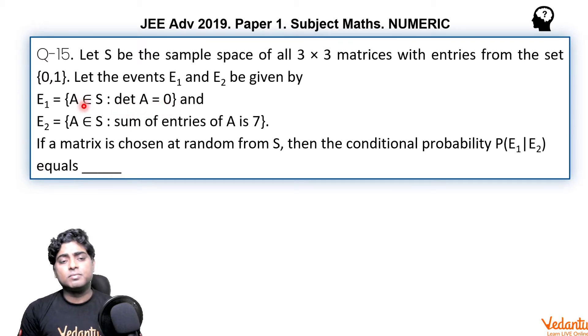E1 consists of matrices A, those matrices whose determinant is 0, belonging to the set S. And E2 is defined as set of matrices A belonging to the same set S, such that sum of entries of A is 7. If a matrix is chosen at random from S, find the conditional probability P(E1|E2).